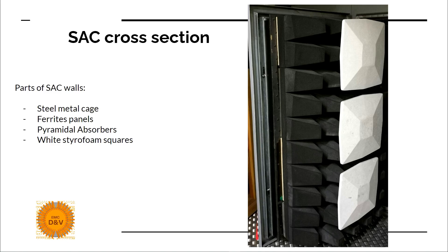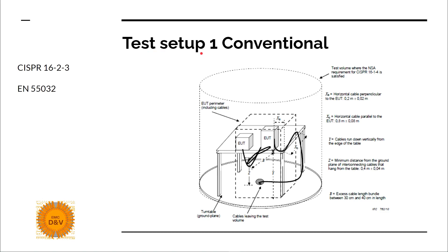You can see the cross section of the semi-anechoic chamber by opening the doors of the chamber. From the outside, the shielded chamber has a steel metal cage that will shield noise going into the chamber. But inside we will have some reflections, and that is why there are ferrite panels — you can see them here. The ferrites absorb noise generated by the device under test that would otherwise reflect off the metal cage; ferrites typically absorb noise up to 1 GHz. Then you will also have pyramidal absorbers that absorb noise from 1 GHz to 8 GHz typically. And you would also have white styrofoam squares to protect the absorbers and to have more light inside the chamber.